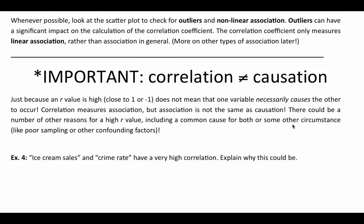Whenever possible, we also want to look at the scatter plot and check for outliers or a nonlinear association. The correlation coefficient alone is not enough. This is most important when you get a weak R value — you can have a very weak linear correlation but still have an almost perfect nonlinear correlation. R only tells you whether there's a weak or no linear correlation. If you put data for a cosine curve into the formula, you'd get a terrible R value, but that doesn't mean there's no association — just not a linear one.